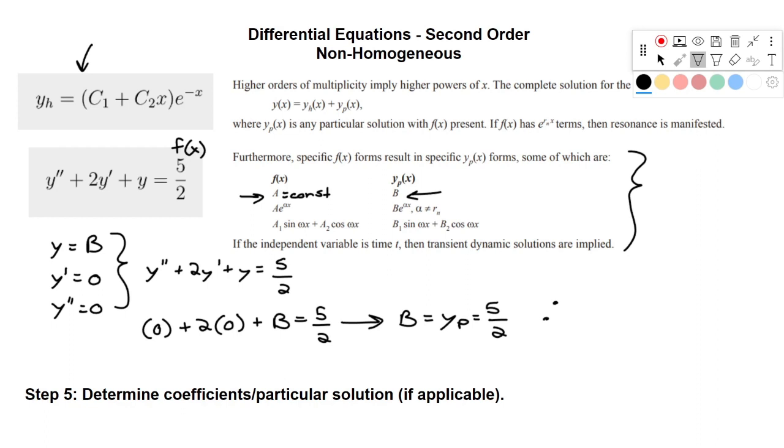Therefore, our total solution we said was the sum of our homogeneous and particular solutions. So it's our homogeneous solution plus our particular solution, 5 over 2. So this is the full solution to this equation.